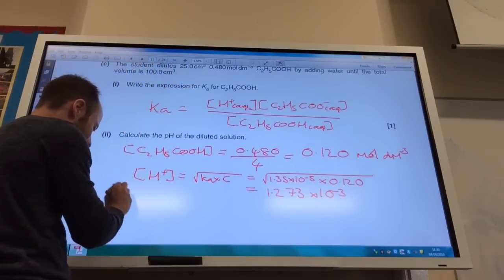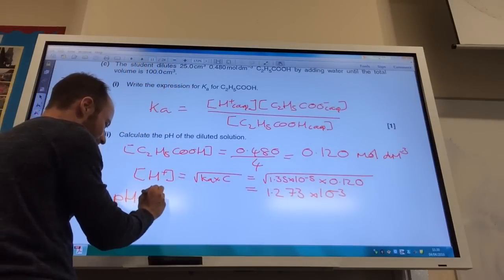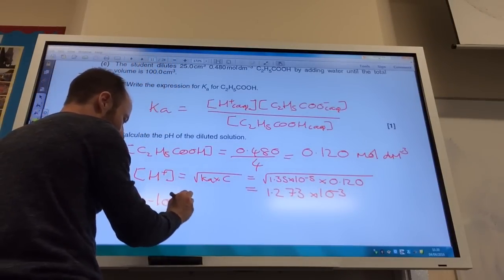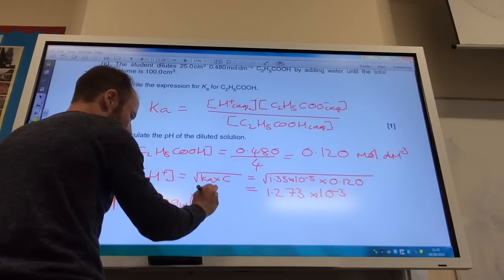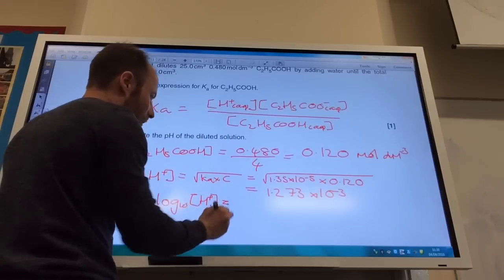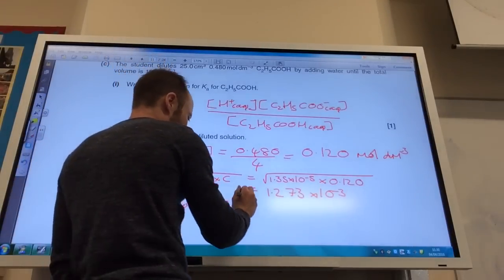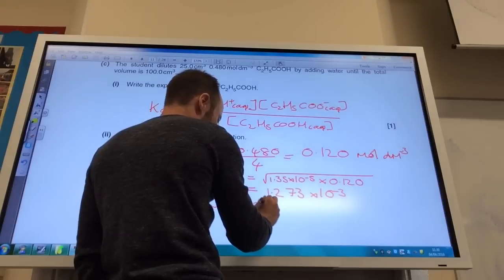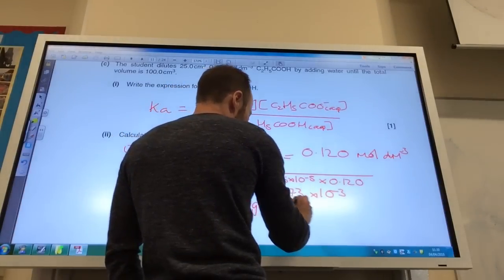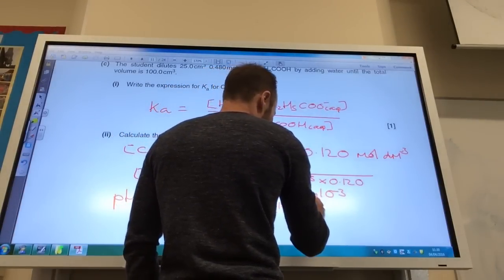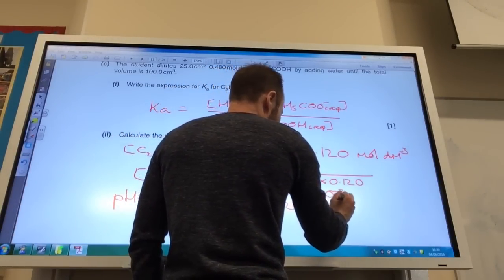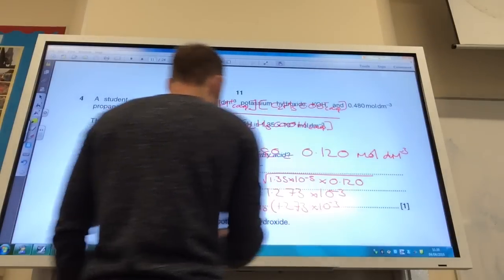And then you bung that into your pH expression. pH is minus log to the base 10 of the concentration of H plus. So that's minus log to the base 10 of 1.273 times 10 to the minus 3.